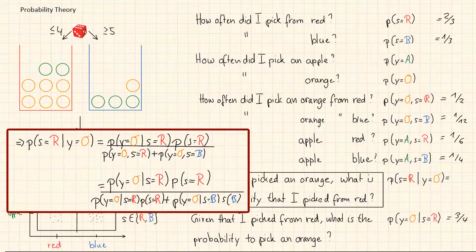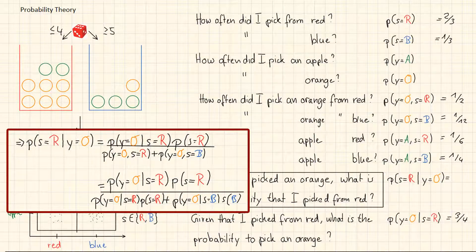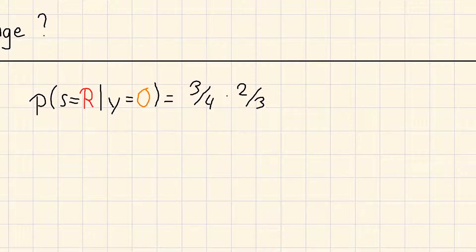Then we have the probability of s is equal to the red box. Which we have on the top here. Which is 2 over 3. Then we look into the denominator.